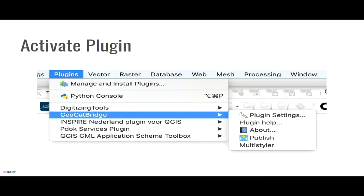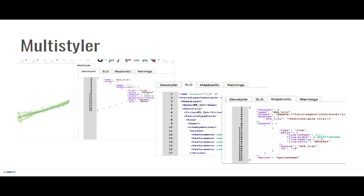Installation will be as easy as it is for other plugins — you activate it via the plugins menu. One of the first features — we developed this actually as a developer tool — is that you instantly get a preview of the style you defined in QGIS, and see it instantly in SLD, Mapbox GL, and GeoStyler.